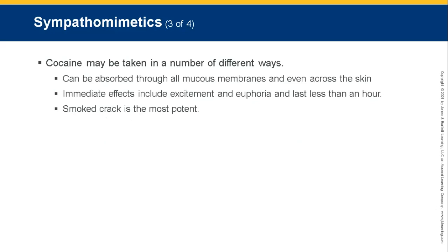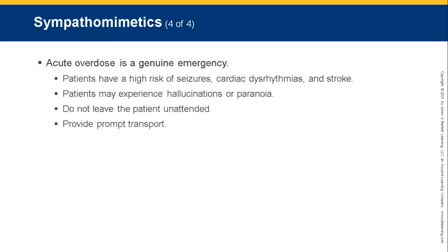Cocaine may be taken in a number of different ways and is one of the most addictive drugs in the world. It can be absorbed through all mucous membranes and even across the skin. Immediate effects include excitement and euphoria but last less than an hour; crack cocaine, the most potent form, may last a little longer. Acute overdose is a genuine emergency — as a CNS stimulant it puts great stress on the heart. Patients have a high risk of seizures, cardiac dysrhythmias, and stroke. They may experience hallucinations or paranoia. Do not leave the patient unattended; provide prompt transport.